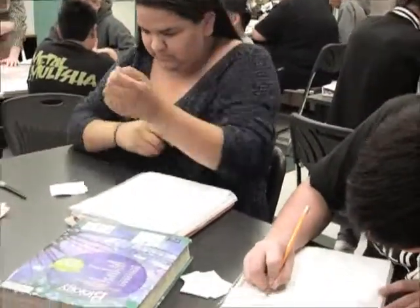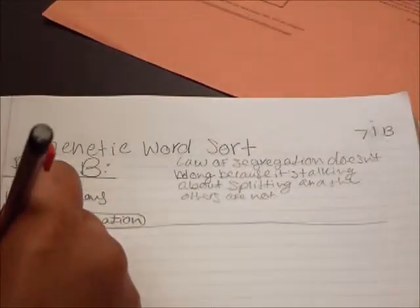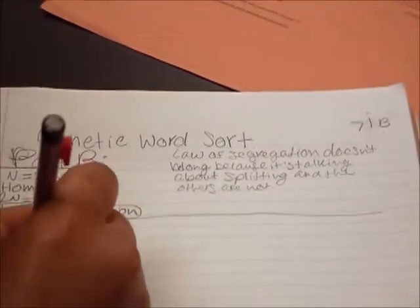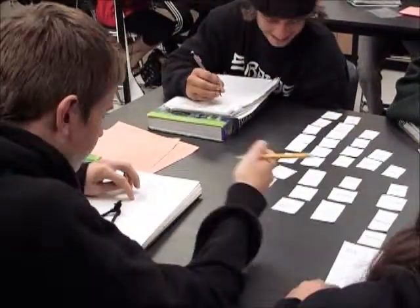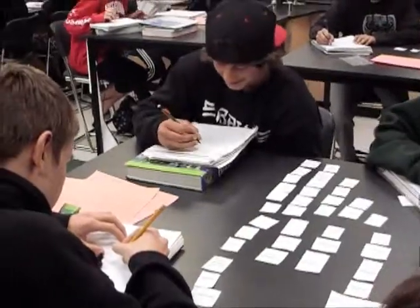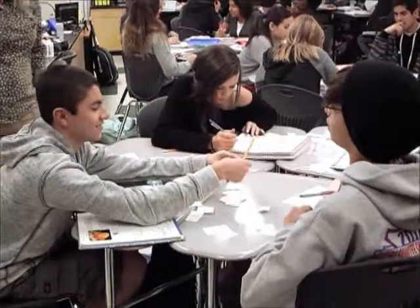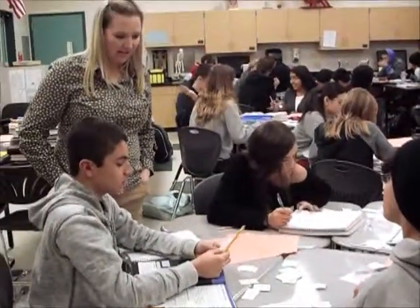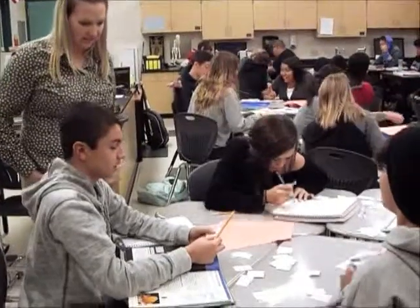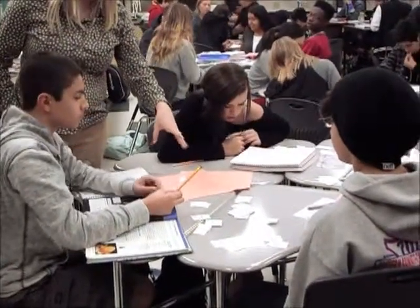There are three parts to this activity. The first part: they get all the sets of words and are given no direction on how to categorize them — they have to come up with the categories on their own. They struggled with this at first; they wanted me to tell them what group to put them in, how many groups they needed. I explained that they make the groups — they could have two groups or ten groups — as long as they had more than one group and an explanation for why the words were placed there.